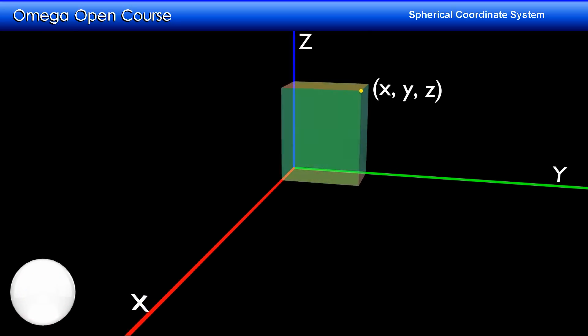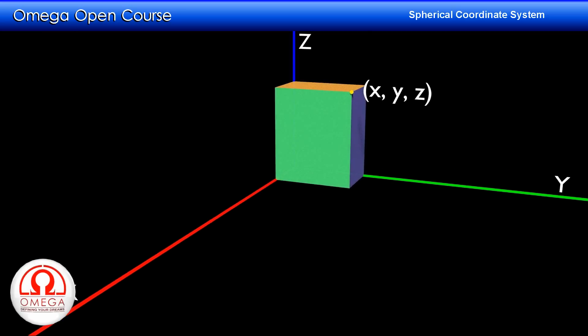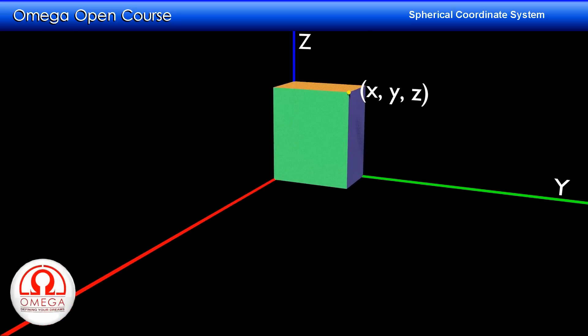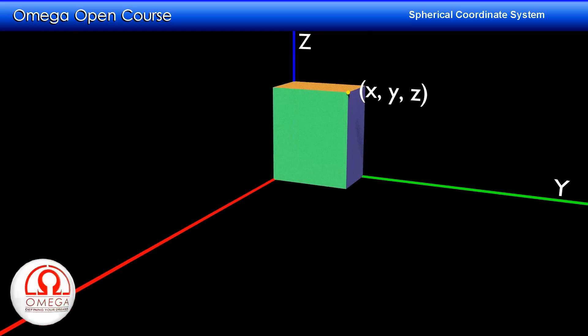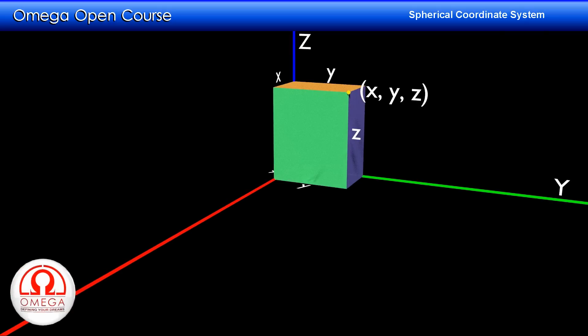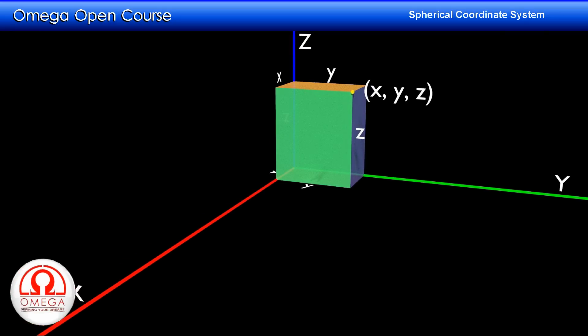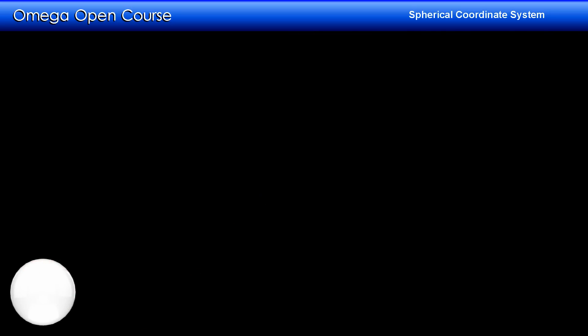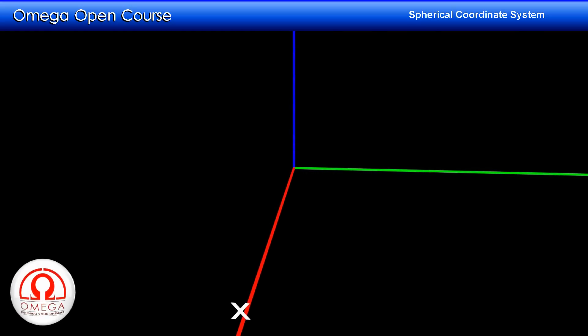In the Cartesian coordinate system, these parameters are the distance of the point from three perpendicular planes, which we know as x, y, and z coordinates. To understand the three parameters in a spherical coordinate system, let us first draw three axes perpendicular to each other.